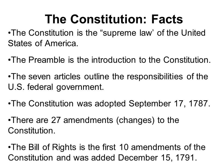Let's review some facts about the Constitution. The Constitution is the supreme law of the United States of America. The preamble is the introduction to the U.S. Constitution. The seven articles outline the responsibilities of the U.S. federal government. The Constitution was adopted September 17th, 1787. There are 27 amendments to the Constitution. The Bill of Rights is the first 10 amendments and was added December 15th, 1791.